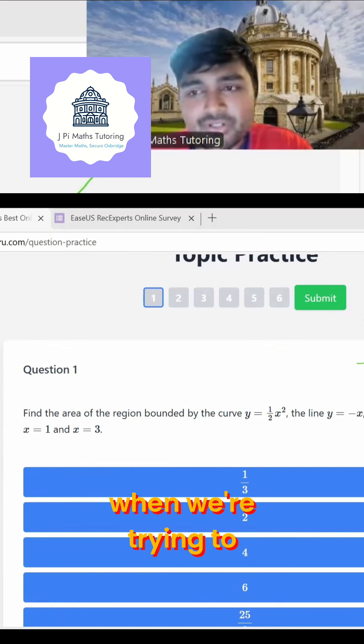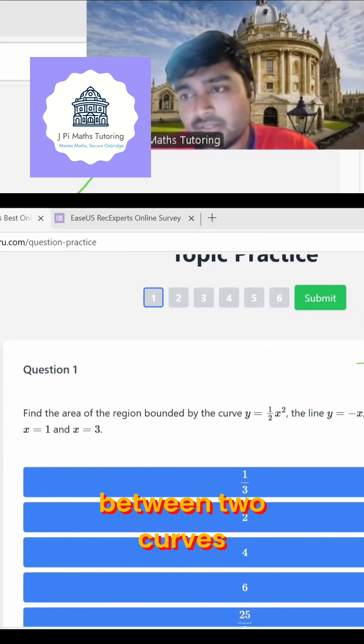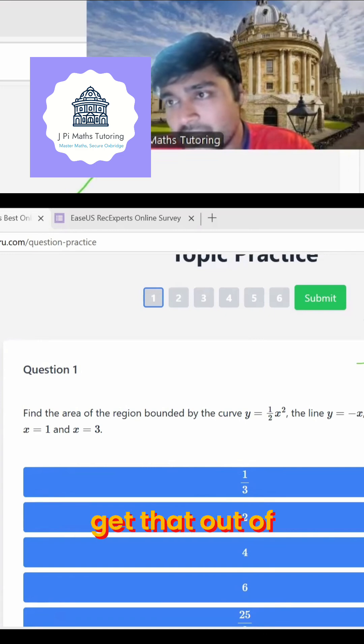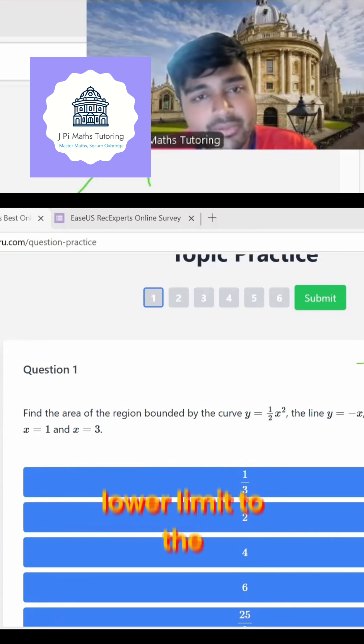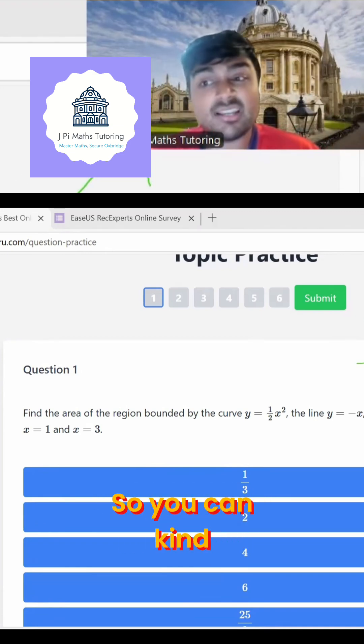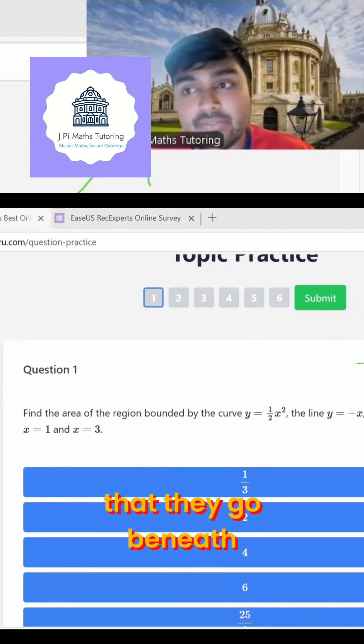And a nice little theorem I like to use when we're trying to find the area bounded between two curves is the area is simply going to be the integral from the lower limit to the upper limit of the top curve minus the bottom curve. So you can kind of ignore the fact that they go beneath the axes.